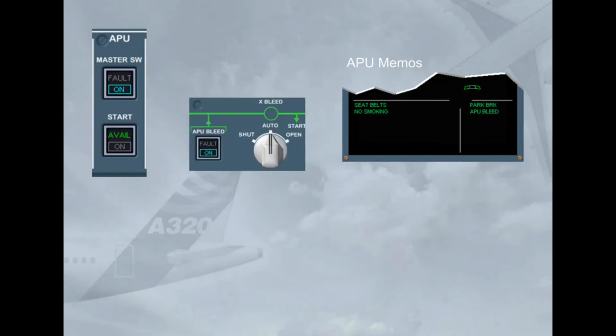As soon as the APU bleed push button switch is set to ON, the green APU BLEED memo replaces the APU AVAIL memo on the engine warning display. This indicates that the APU bleed valve is open with bleed air pressure available.